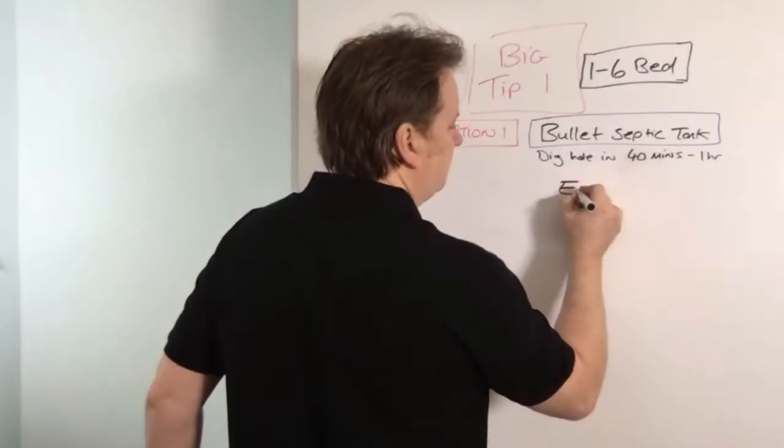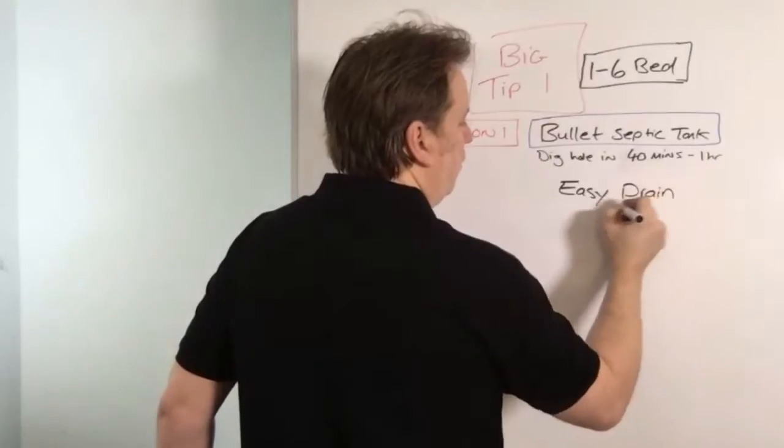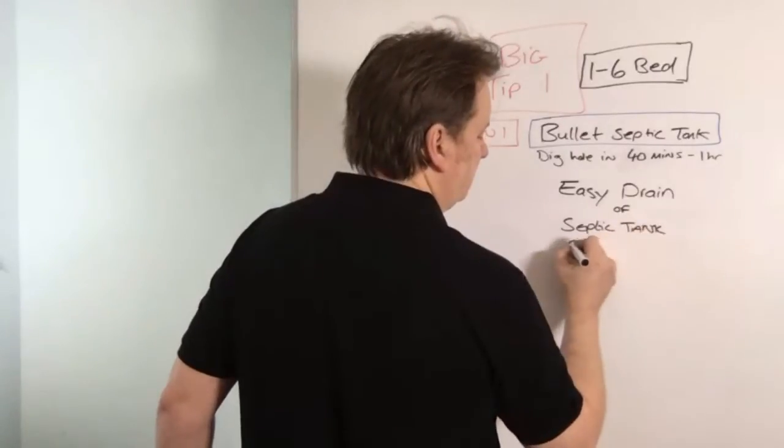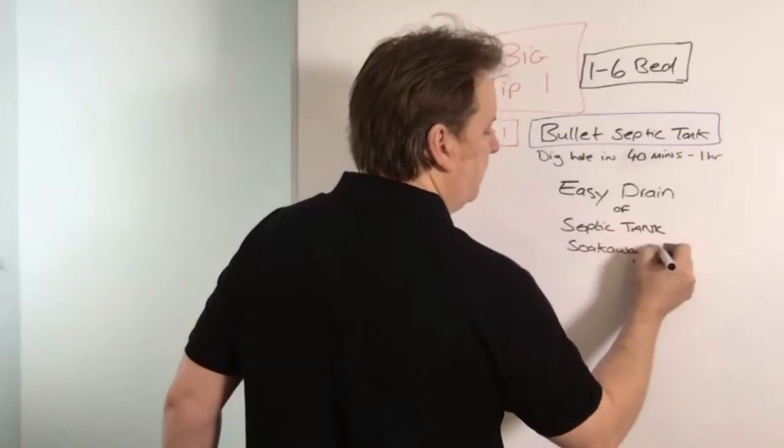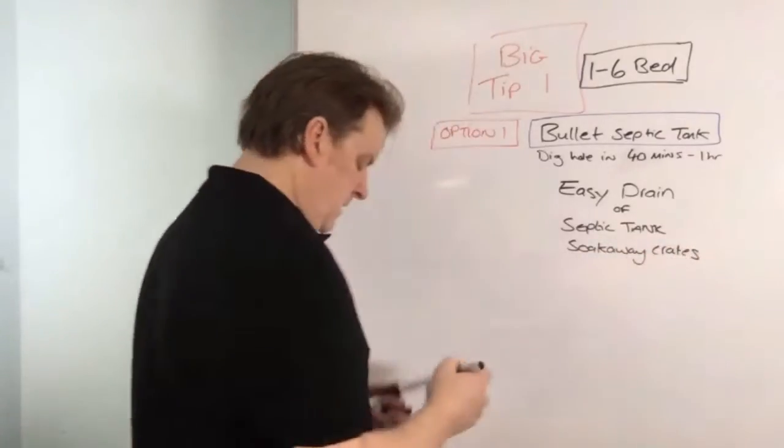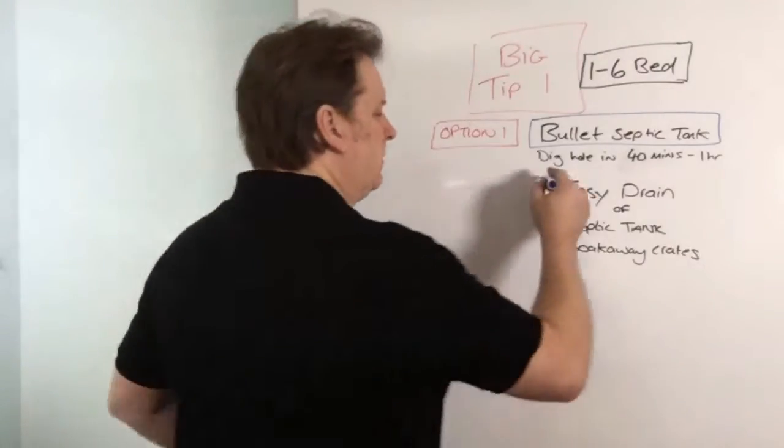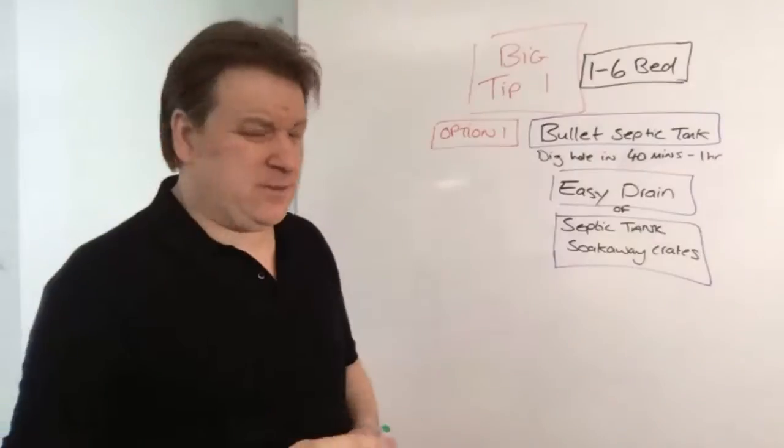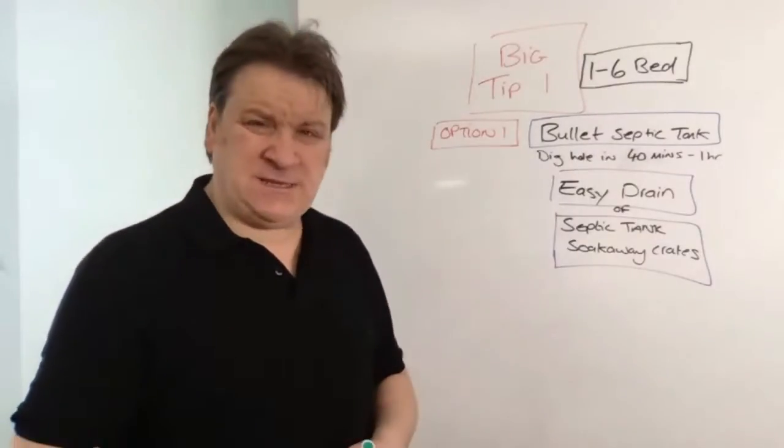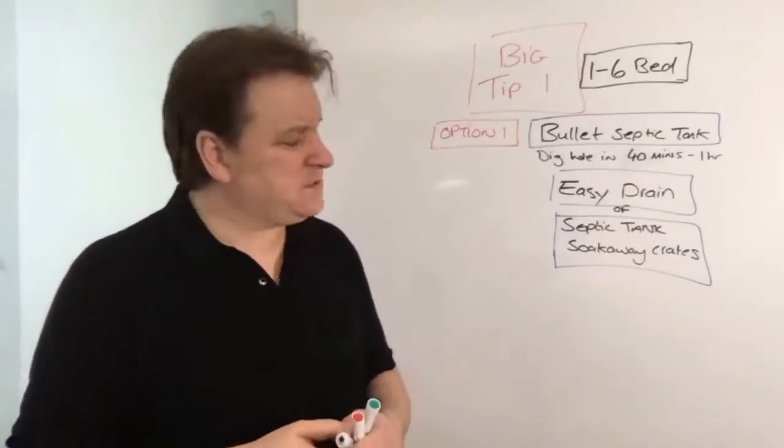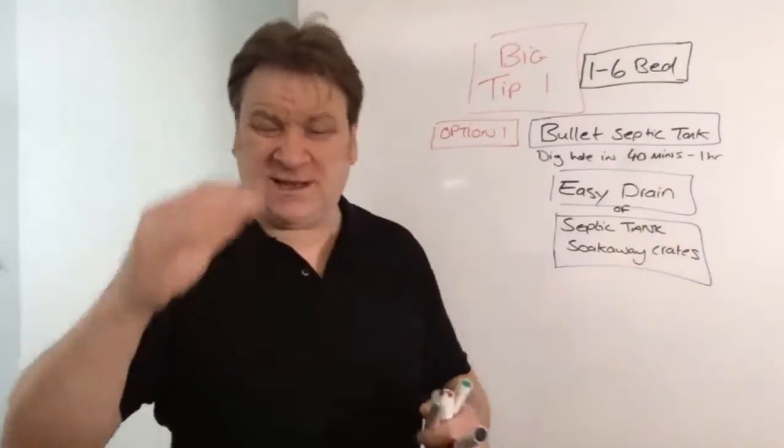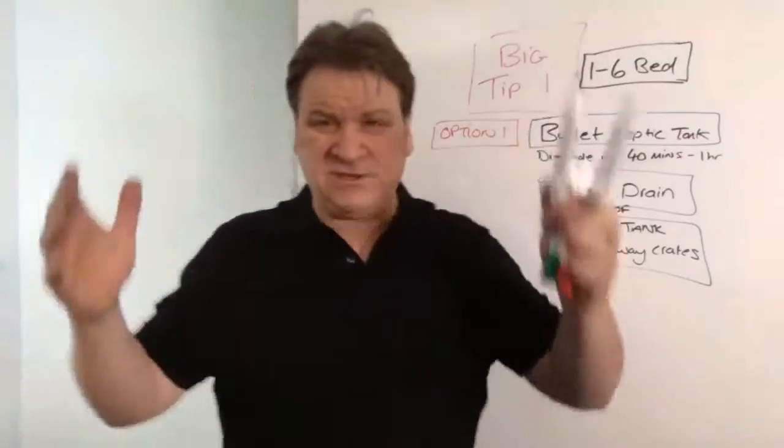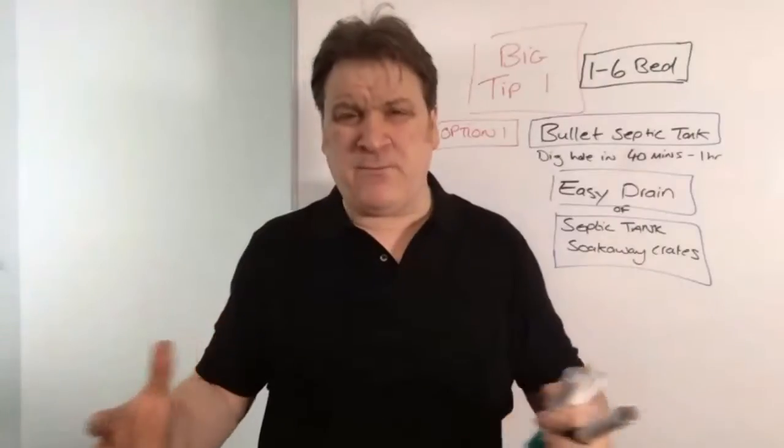If you want to ring me for advice before getting a set, go to septictank.co.uk - you get loads of free advice on there. I'll give you free advice and help you which system to go for. Soak away wise, I would go for something like Easy Drain or septic tank soak away crates. Both of those are really easy to install, both of them fully legal and compliant with UK building works, and they're very easy to put in.